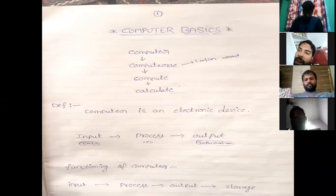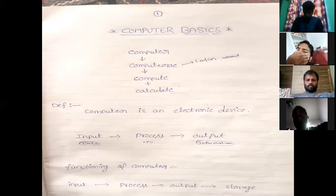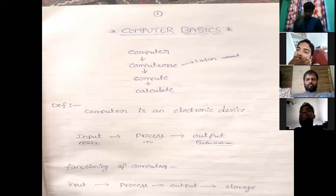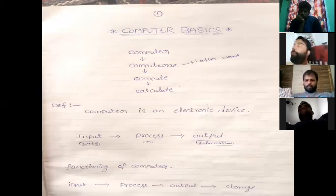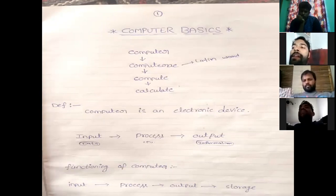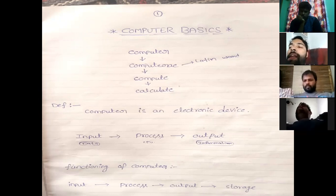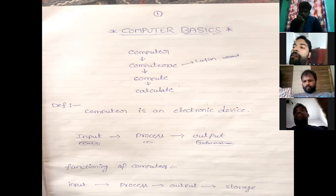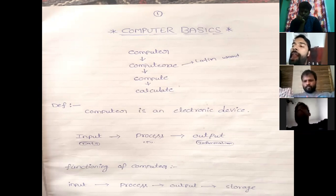Next, the functioning of the computer. A computer performs: Input, Process, Output, and Storage. Input is the data we provide. Process is performed by the CPU using machine language — low-level language, which uses binary digits: zeroes and ones.